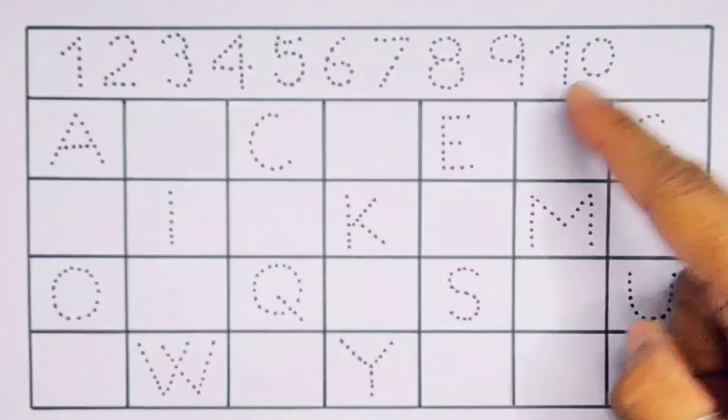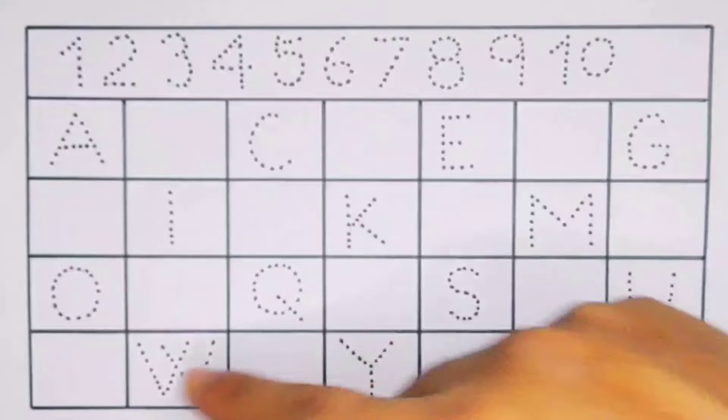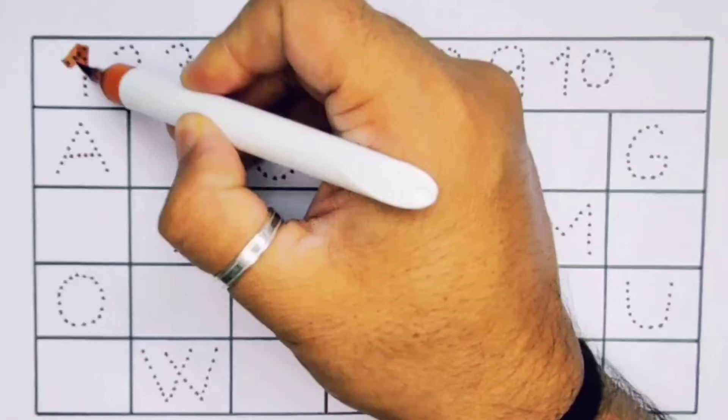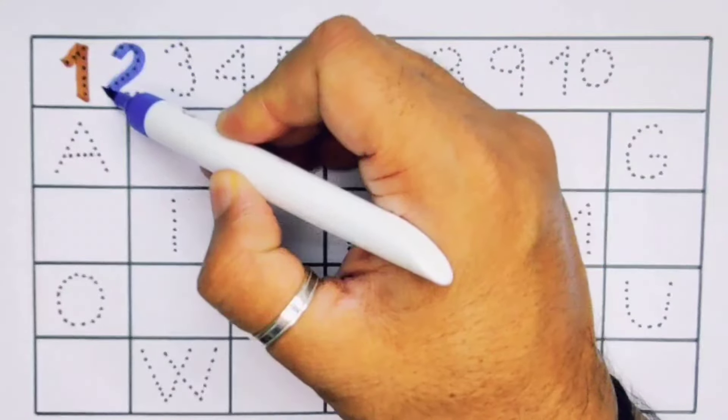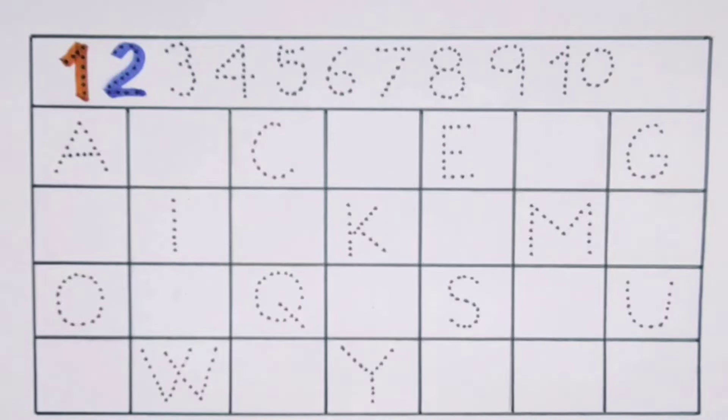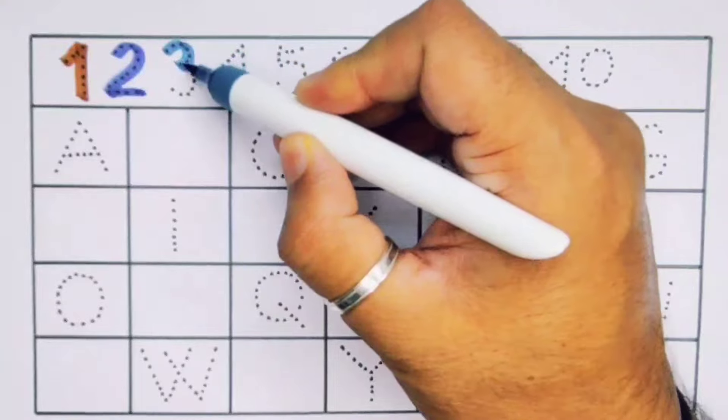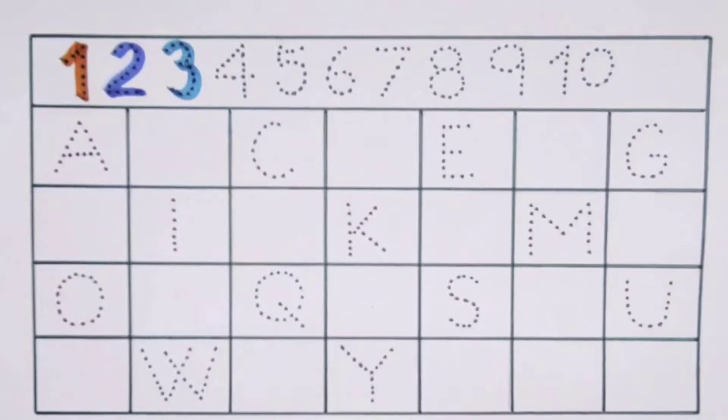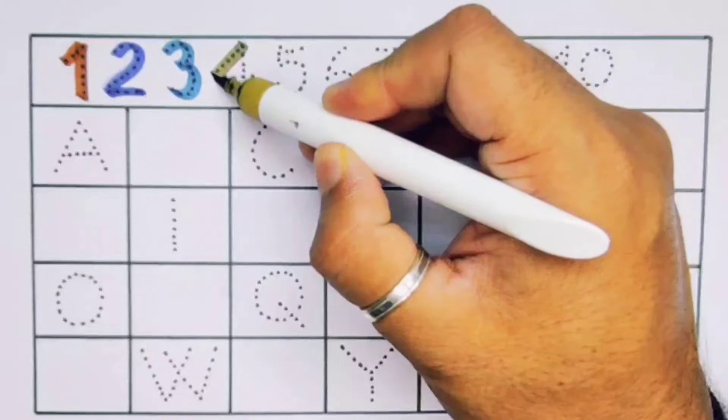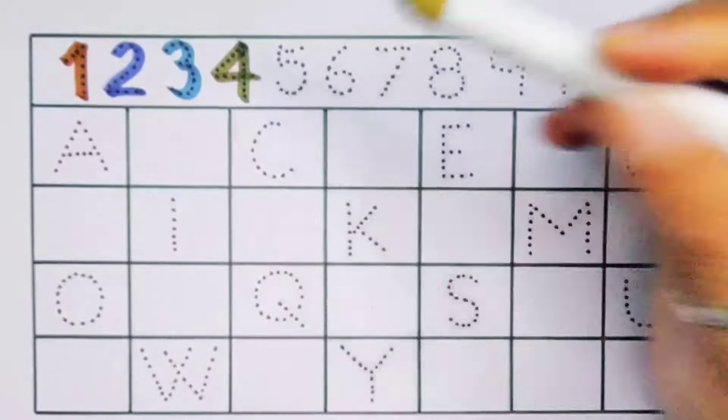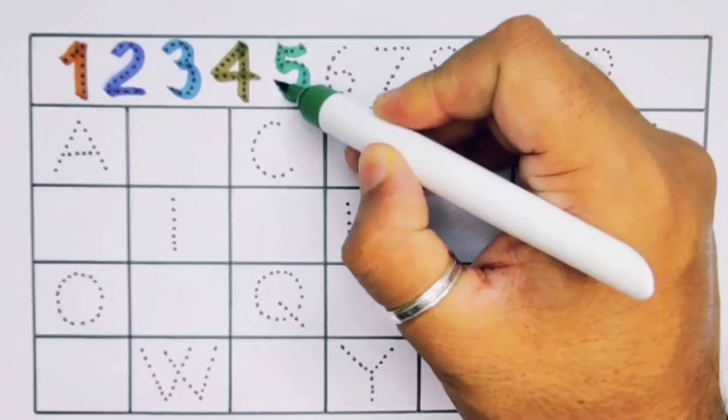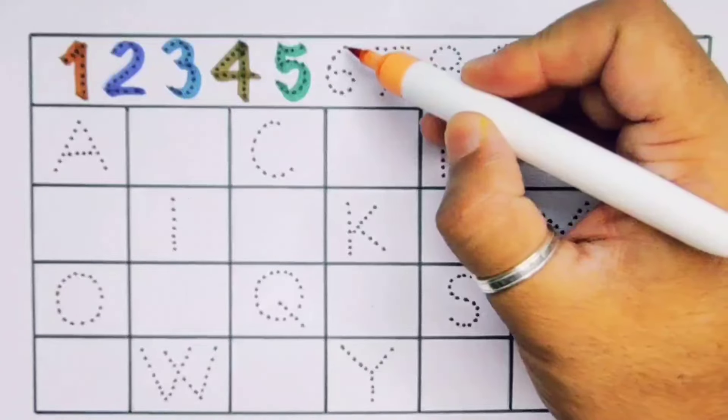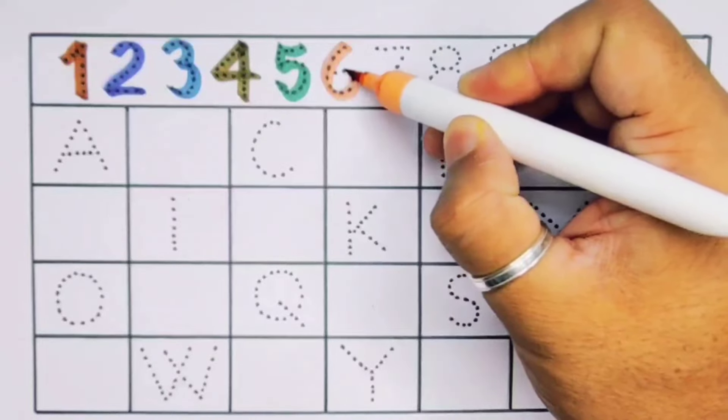Now let's learn the numbers counting 1 to 10 and alphabet A to Z. First, one, number one. Next, two, number two. Next kids, it's three, number three. Next kids, it's four, number four.